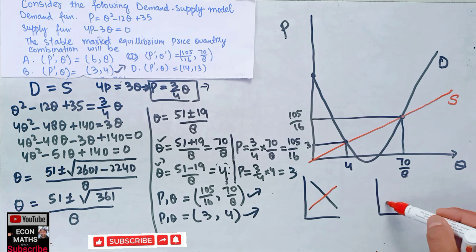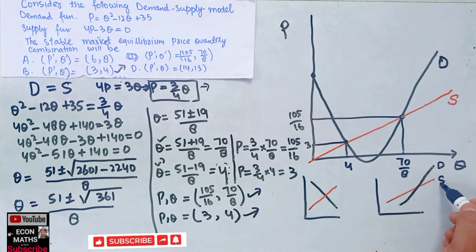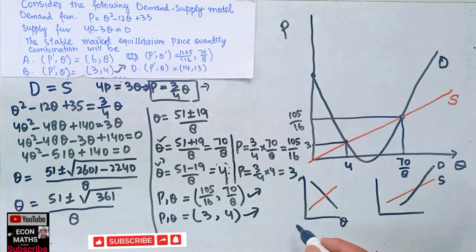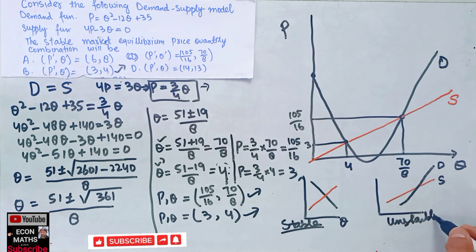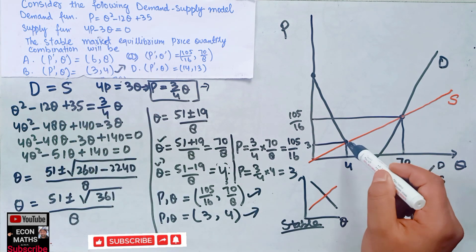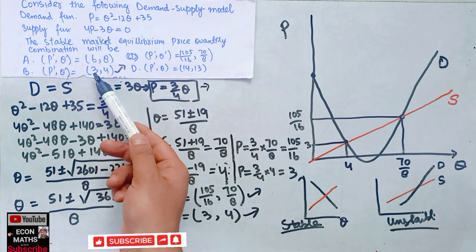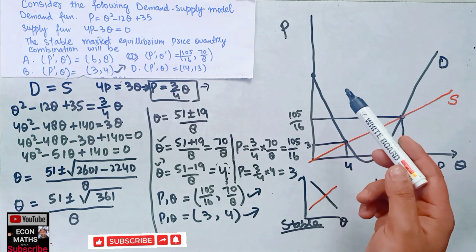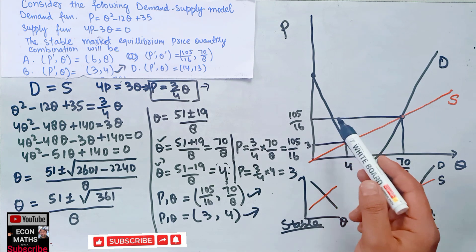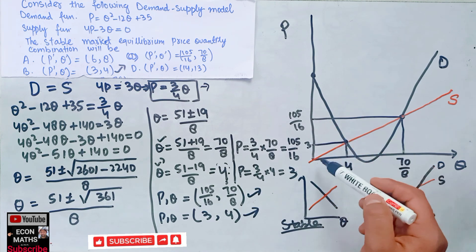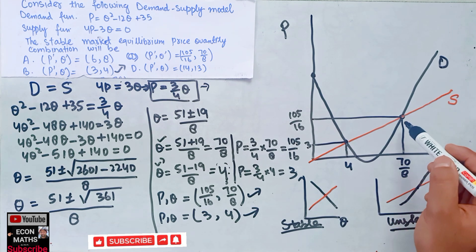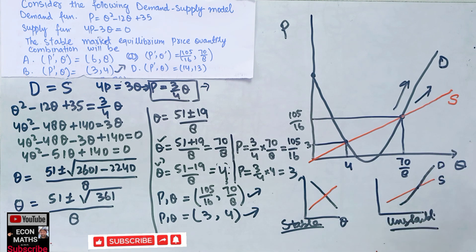Looking at the graph, at one intersection point both the demand and supply functions are upward sloping — this is the unstable equilibrium. At the other intersection point, the demand function is downward sloping and the supply function is upward sloping — this is the stable equilibrium. Therefore, the correct answer is the combination P = 3 and Q = 4.